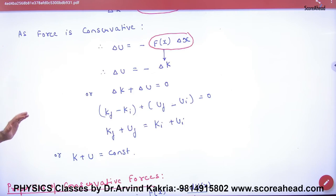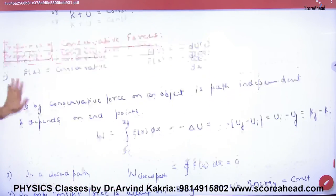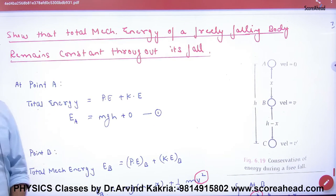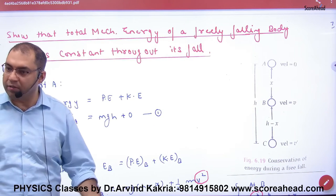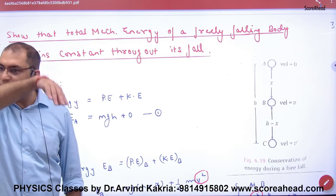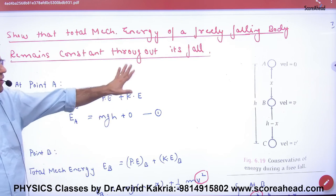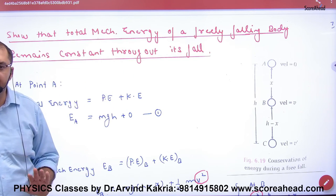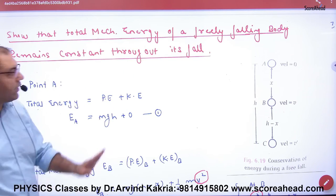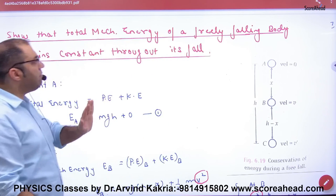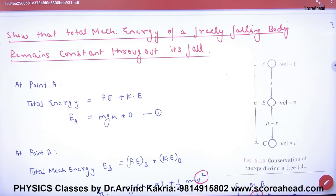यह एक mathematical proof है। अगर paper में आए कि 'show that mechanical energy of a body is constant' तो इस proof को करना। सबसे best proof यह है — बहुत आसान है। वो कहता है: 'show that total mechanical energy of a freely falling body is always constant।'